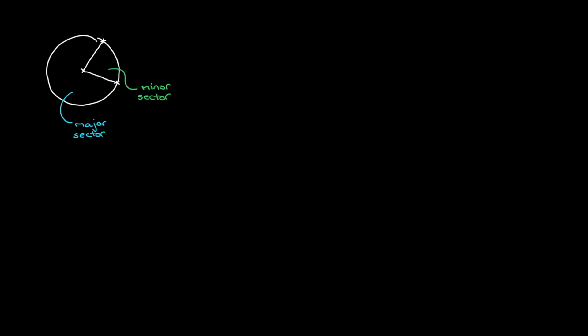The next thing I want to quickly define is what an arc is. Given a sector, an arc is a portion of the circumference. The circumference is the full turn around the circle. One of the arcs could be this one right here — that would be the minor arc. In a similar way, I've got an arc around the bigger sector, and this is known as the major arc.